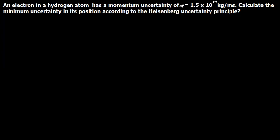Let's assume we are given this kind of problem, which says an electron in a hydrogen atom has a momentum uncertainty, which is dp. We are given delta p to be equal to 1.5 × 10⁻²⁴ kilogram meter per second. We are asked to calculate the minimum uncertainty in its position according to the Heisenberg uncertainty principle.